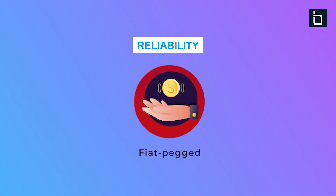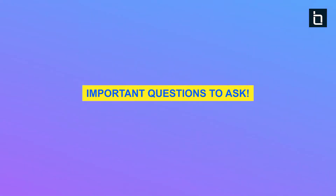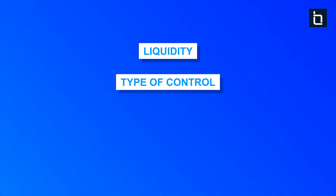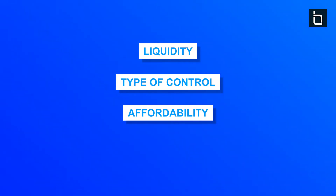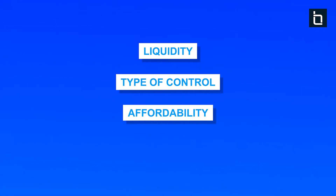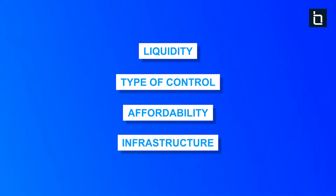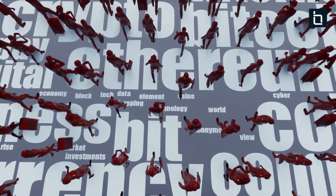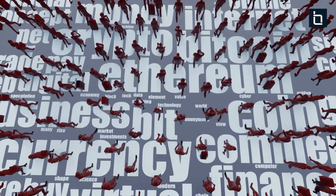To identify the type of stablecoin you require, ask yourself the following questions: How much liquidity do I need for my stablecoin? What kind of decentralization independence do I require? How many audits can I afford to increase trust and reduce risk? How simple or complex do I want the architecture to be? Once you get these answers, you will be able to decide the type of stablecoin you want to build.